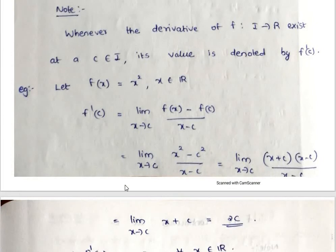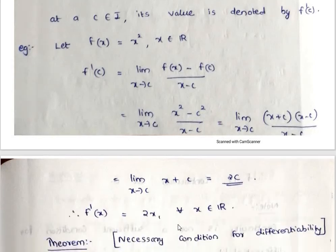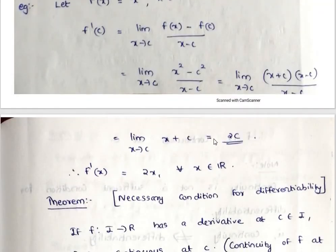Now an example. Let f(x) = x². Then f'(c) equals the limit as x tends to c of f(x) minus f(c) divided by x minus c. Since f(x) = x², f(c) = c². Substituting values, we get the limit as x tends to c of x² minus c² divided by x minus c. Using the identity a² - b² = (a + b)(a - b), this becomes the limit as x tends to c of (x + c)(x - c) divided by (x - c). Cancelling x minus c, we get the limit as x tends to c of x + c. Substituting x = c, we get c + c, so f'(c) = 2c.